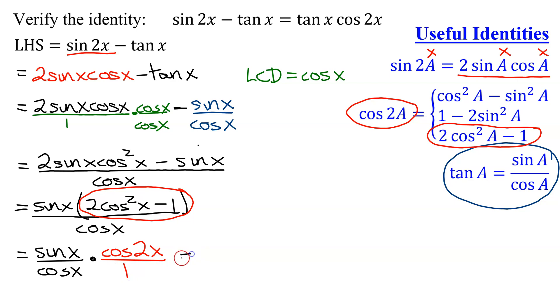And now, what is the sine of x divided by the cosine of x? We've just used that before. That's the tangent of x times the cosine of 2x. Is that my right-hand side? That equals the right-hand side. So I have proved the left-hand side equals the right-hand side, so I have verified my identity.